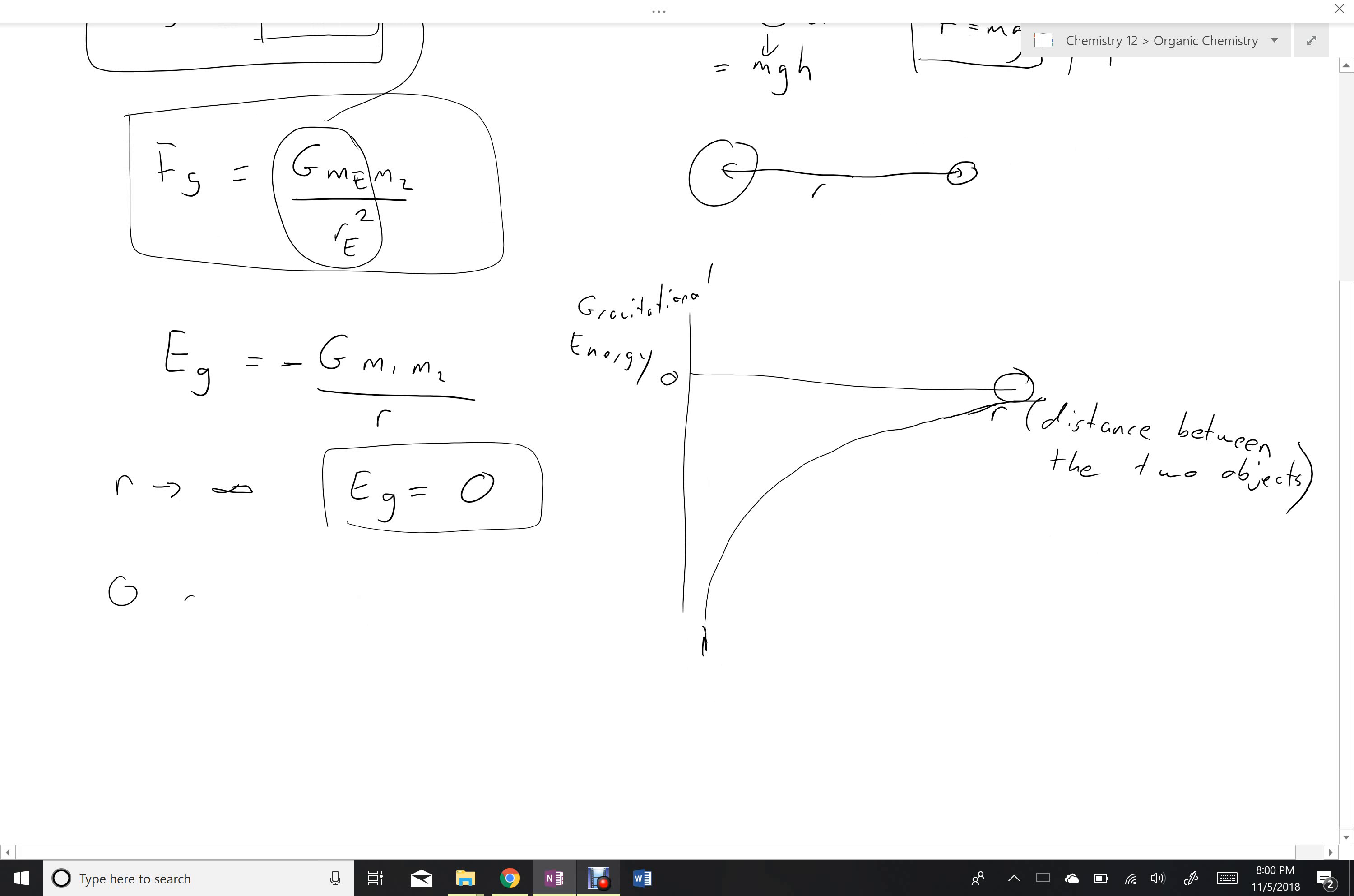Zero gravitational energy. In the universal sense, so when we're dealing with planets and stuff coming and going from planets, zero gravitational energy occurs when R is infinity, which basically means when the objects are very far apart. So that's what we consider to be zero when the two things are so far apart that there's essentially no interaction between them.